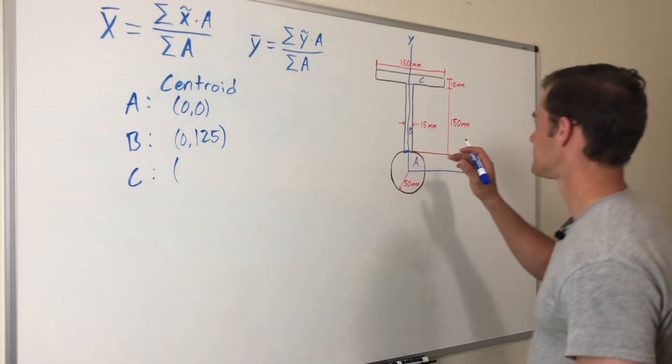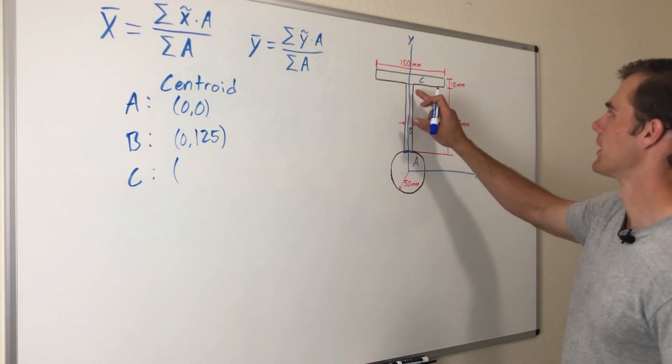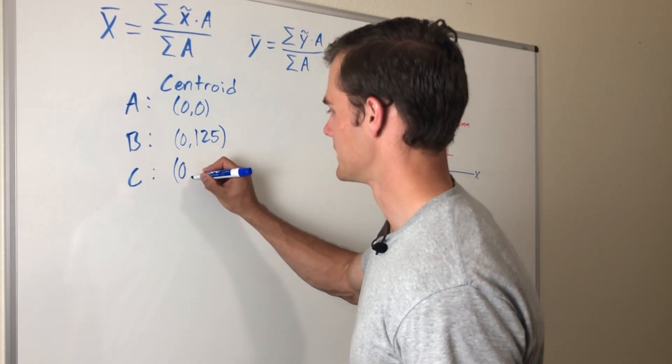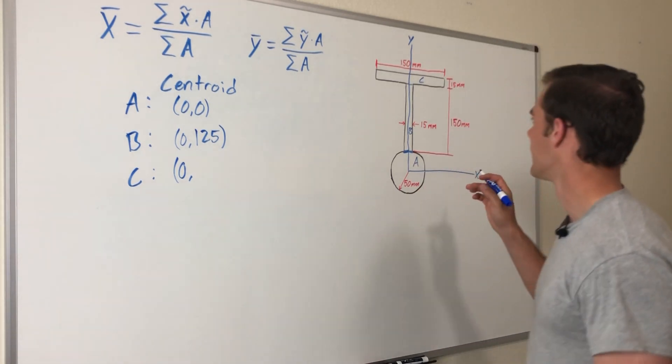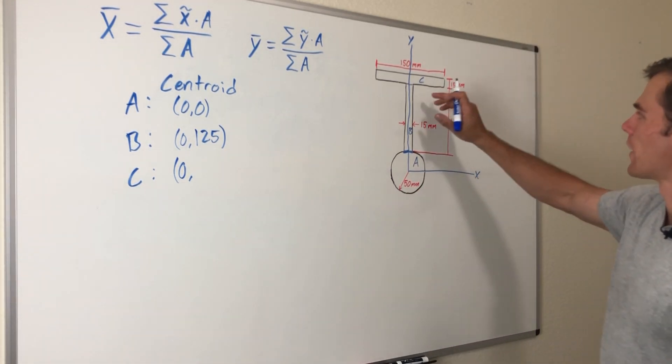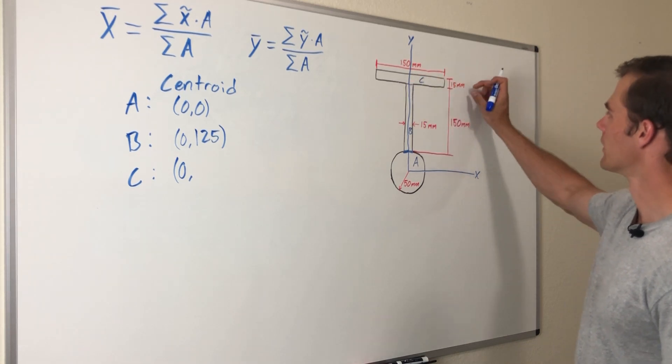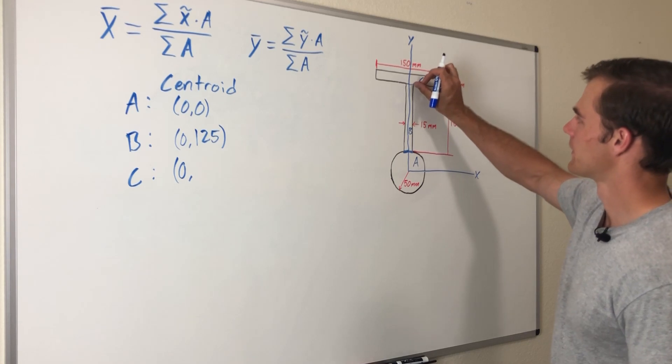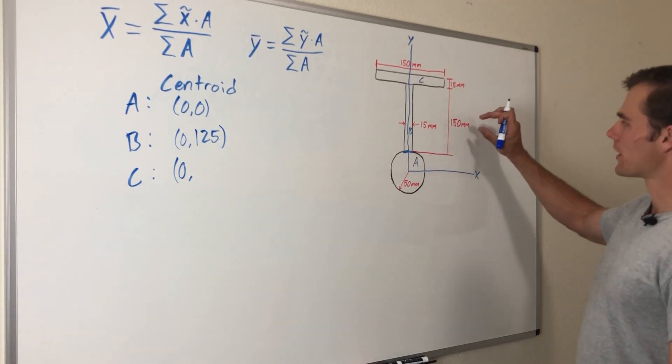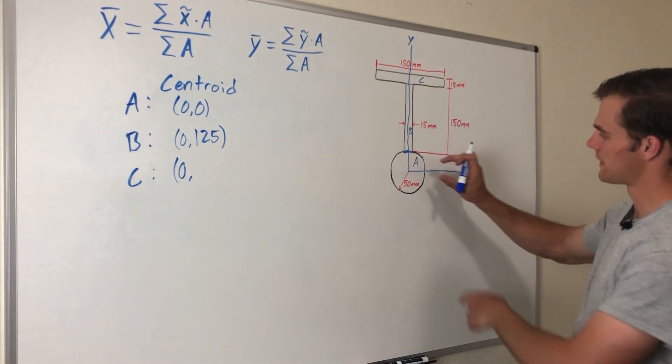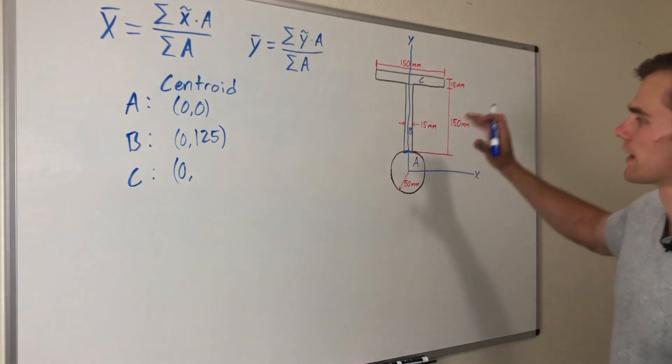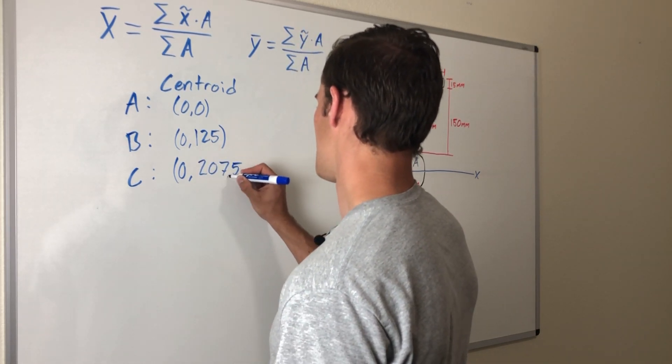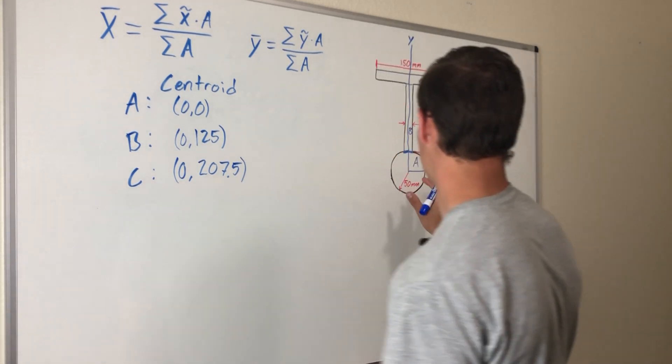For C, once again this part is symmetrical about the y-axis we've set up, so its x coordinate of the centroid is zero. Its y coordinate is right in the middle of this object, so 7.5 millimeters up from this side plus the 150 for this distance and then the 50 for this distance. That all adds up to 207.5 millimeters away from our origin.